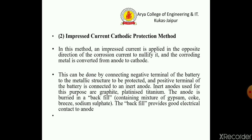The second method is impressed current cathodic protection. In this method, an impressed current is applied in the opposite direction of the corrosion current to nullify it, and the corroding metal is converted from anode to cathode. This can be done by connecting the negative terminal of the battery to the metallic structure to be protected.